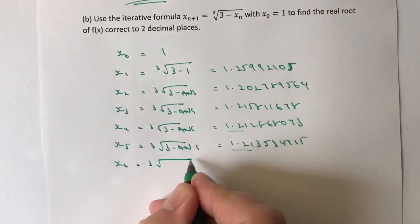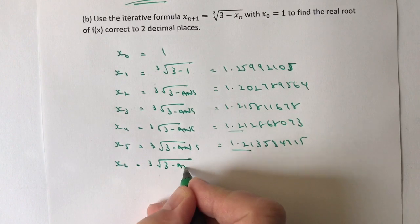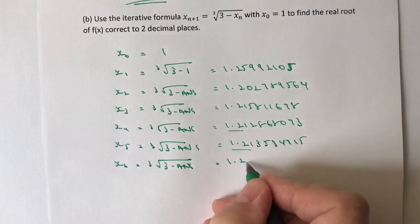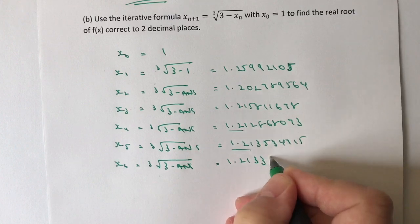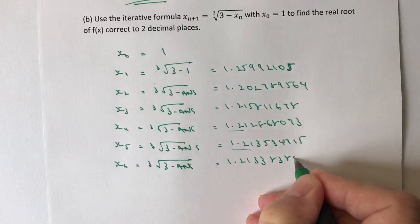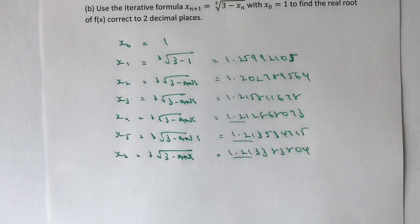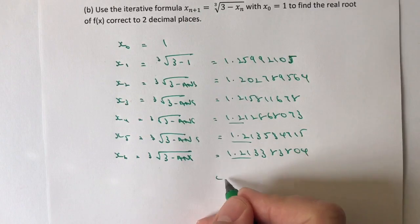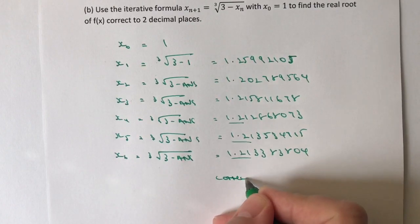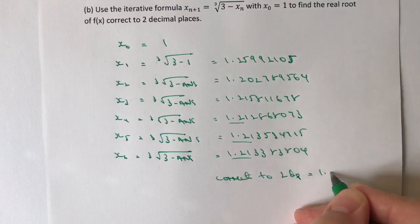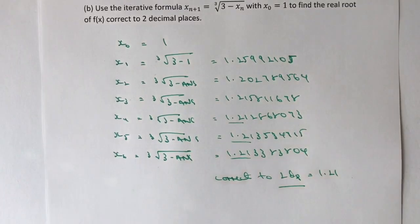x₆: cube root of three minus the answer, and that equals 1.213383804. Again, it's 1.21. So the answer to this particular question, correct to two decimal places, equals 1.21. That would be the end of that particular question.